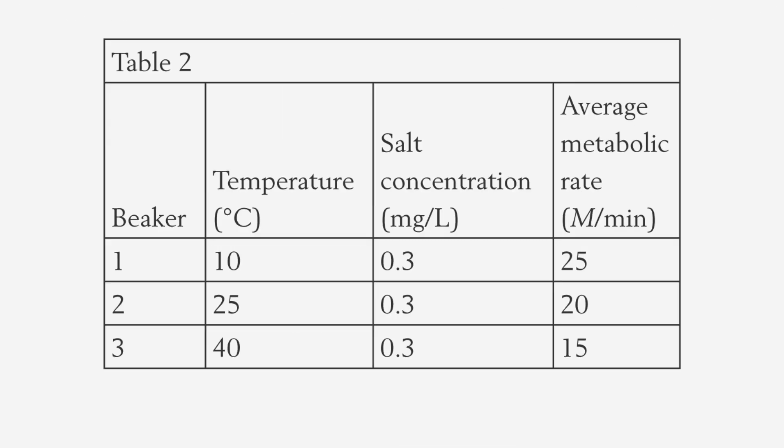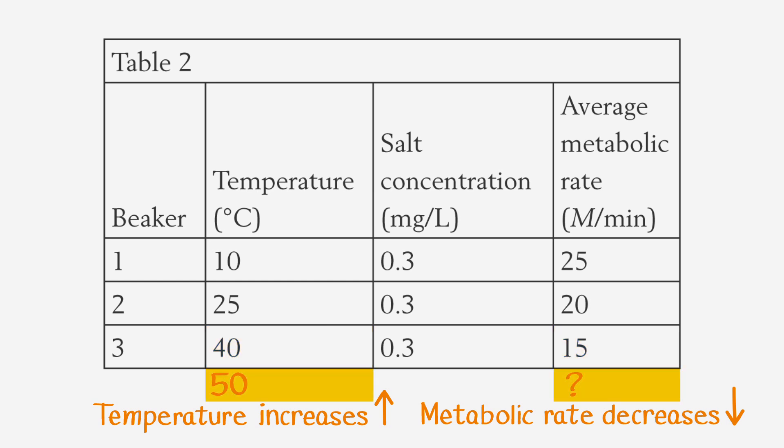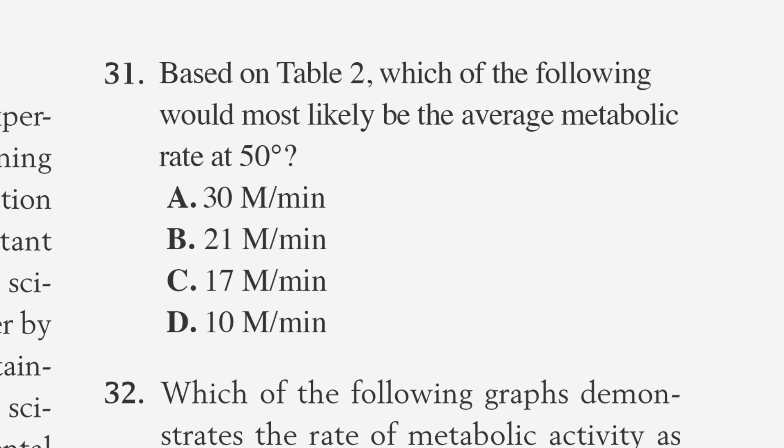Since the chart doesn't provide a value at 50 degrees, we have to extrapolate one based on the trend. You can see that as temperature increases, metabolic rate decreases. The highest temperature on the chart is 40 degrees with a metabolic rate of 15. Since 50 degrees falls below 40 on the chart, and there's an inverse relationship between temperature and metabolic rate, we know it needs to be less than 15, so our only choice is D. 10 degrees.